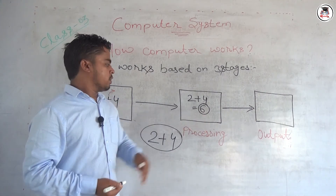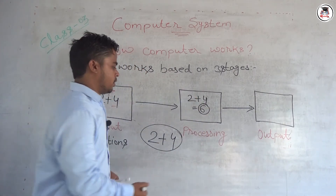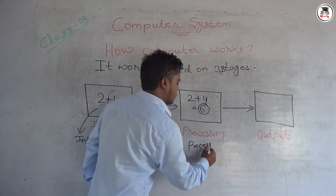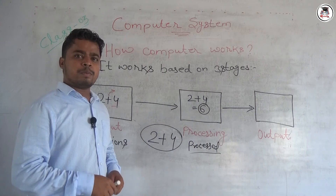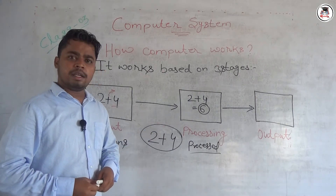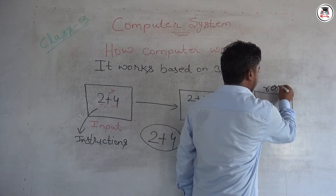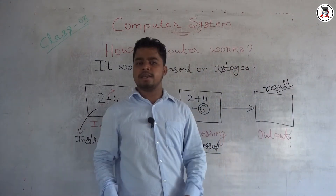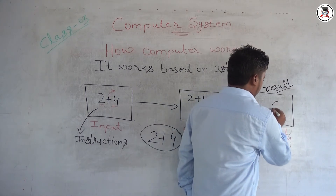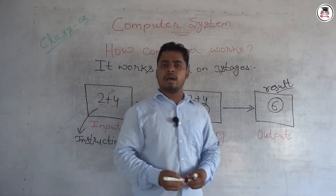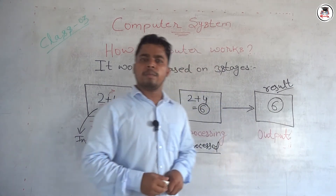These instructions are passed to stage two. In stage two, the instructions are processed internally, and we get the result. We provided two plus four — these will be processed in the second stage and the final result will be prepared for us. After processing, this result is displayed to us on our screen as the output. In the third stage, we get the result — the addition of two and four is six. So we are getting six as the output, that is the final result. This is how the computer basically works.